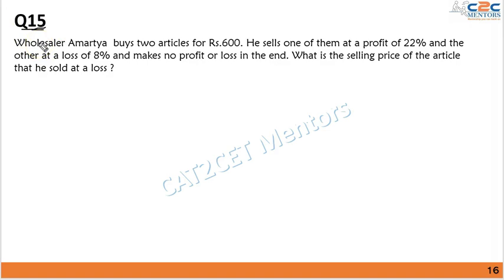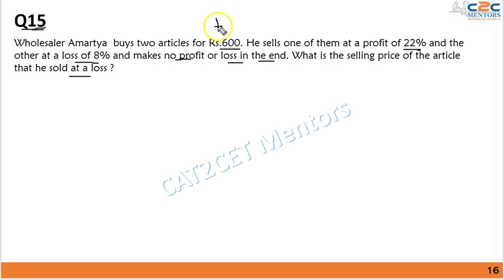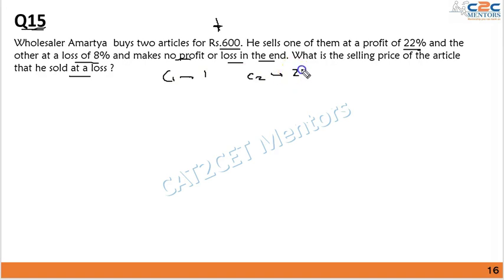Wholesaler Amartya buys two articles for 600 rupees. He sells one at a profit of 22% and the other at a loss of 8%, making no overall profit or loss. What is the selling price of the article sold at a loss? Let c1 and c2 be the cost prices of the two articles. Equation 1: c1 + c2 = 600.